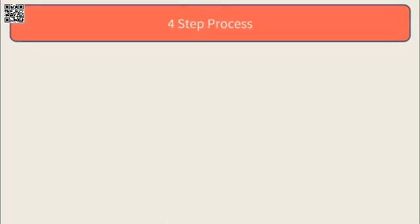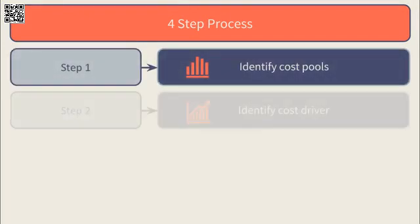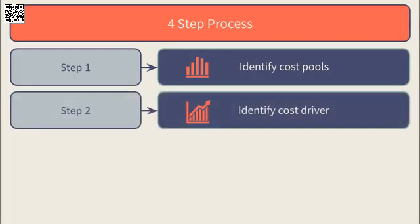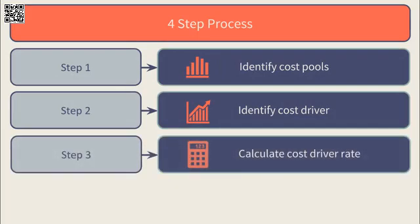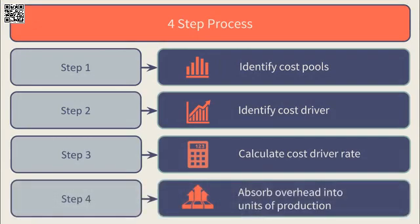There are four main steps involved in calculating the overhead cost per unit under activity-based costing. Step one: separate the overheads into cost pools. Step two: identify the cost driver for each cost pool. Step three: calculate the overhead absorption rate for each cost driver. And step four: use the overhead absorption rate to absorb costs from each cost pool into the units of production. This calculates the overhead cost per unit.